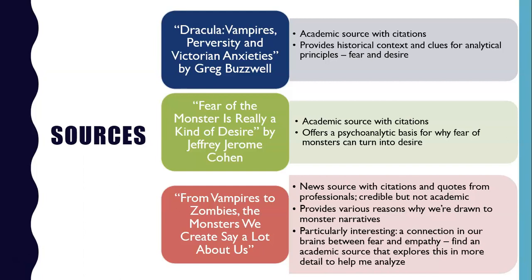Buswell talks about how vampires symbolized fear and desire in the Victorian era, and that might give me a basis of principles I could use in my analysis to look at how fear and desire is represented differently in different time periods. Then I've got another academic source full of citations that I might even track down and see if they're useful to me as a source.